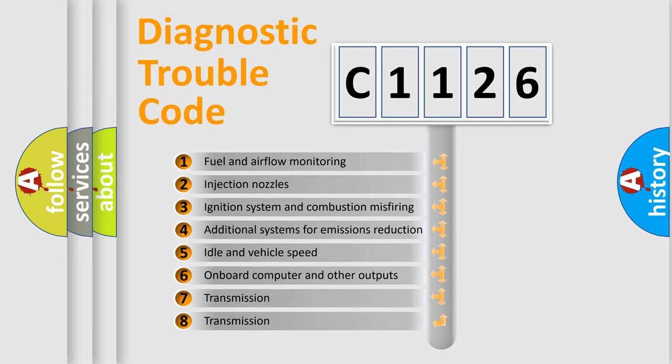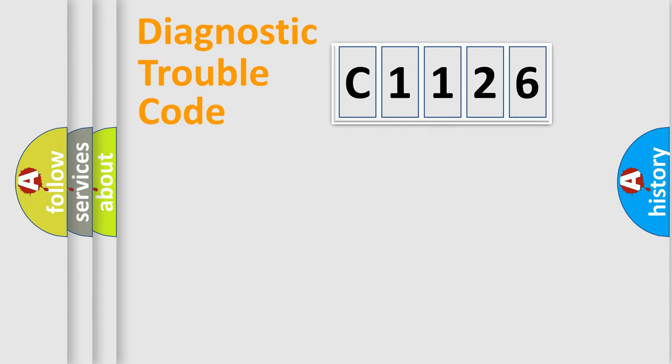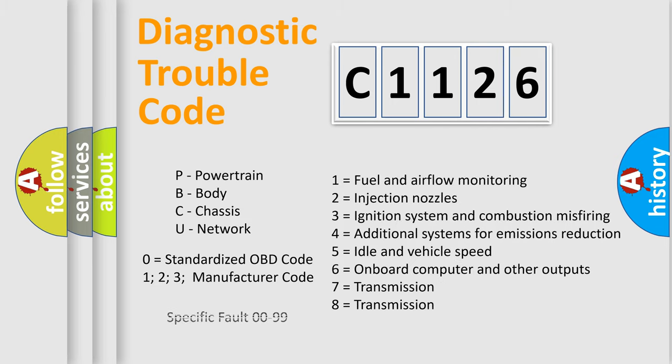The third character specifies a subset of errors. The distribution shown is valid only for the standardized DTC code. Only the last two characters define the specific fault of the group. This division is valid only if the other character code is expressed by the number zero.